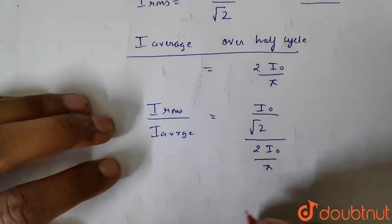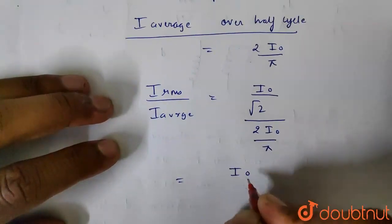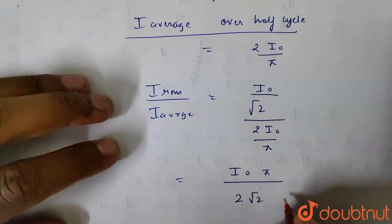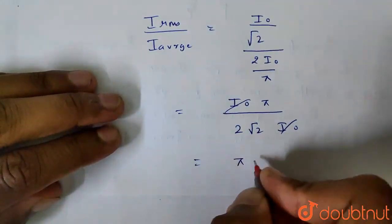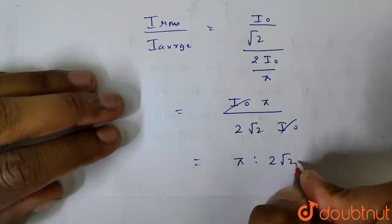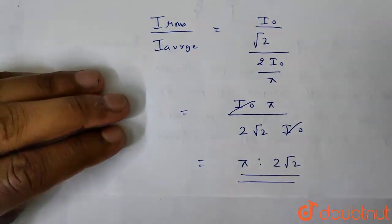So I can say I0 into pi upon 2 root 2 I0. The I0 cancels - the ratio is pi upon 2 root 2. This is the ratio asked.